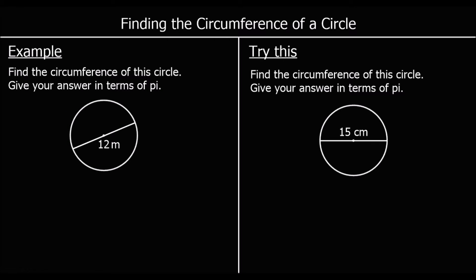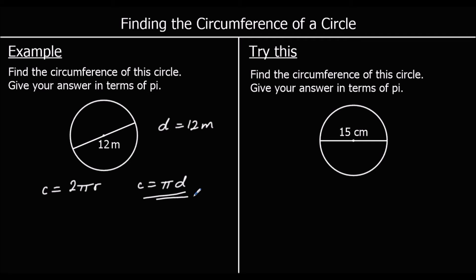Another question: find the circumference, giving your answer in terms of pi. This time we're given the diameter of twelve metres. Using C = π × diameter: the circumference is pi times twelve, which we write as 12π. The answer is 12π metres.